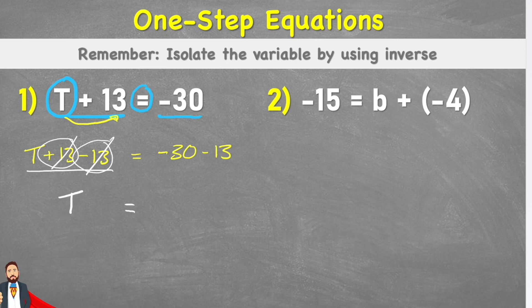We have negative 30 and we're going even further down, getting even more of a negative. So we're going to be going further down the number line and we'll end up with negative 43. So in this case, t equals negative 43.